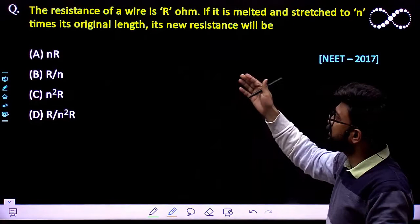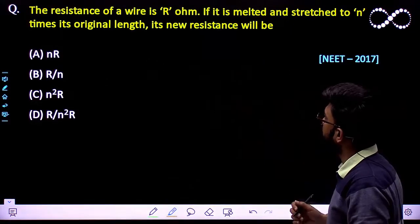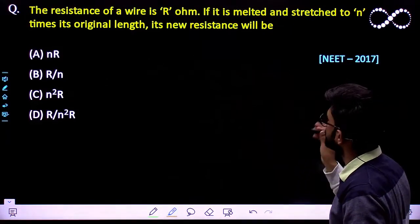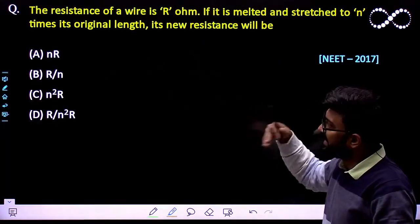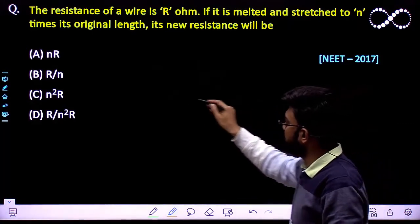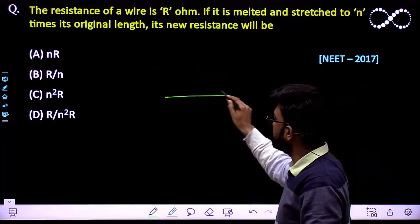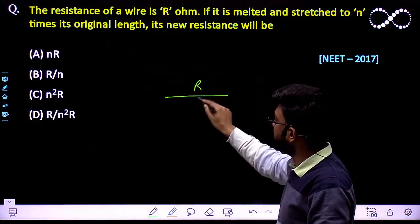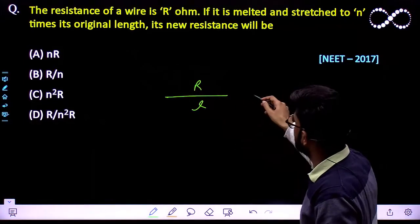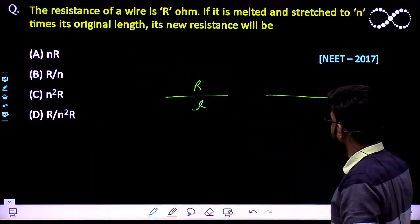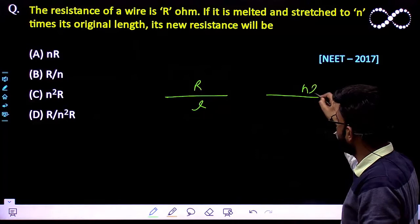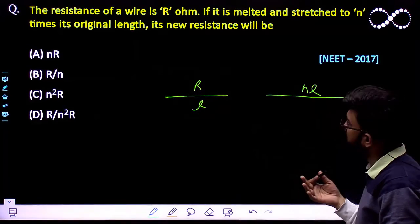The question says: the resistance of a wire is R ohm. If it is melted and stretched to N times its original length — so that means if its resistance is R and its length is L, it is melted so that its new length becomes NL, which is N times the original.